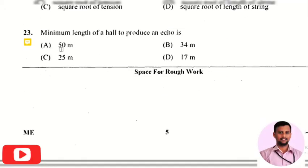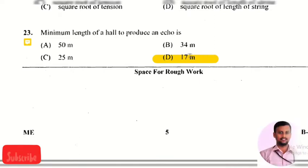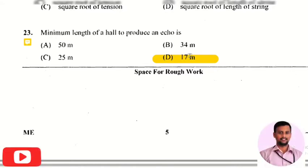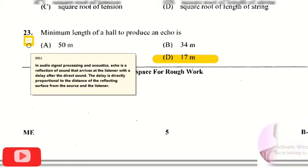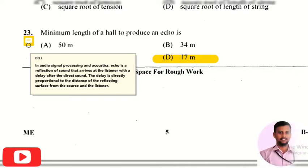The next question is: the minimum length of a hall to produce an echo is? The right answer is option 4, that is 17 meters. So if the hall is 17 meters or more, the echo will be produced in that particular hall. In audio signal processing or acoustics, the echo is a reflection of a sound that arrives at the listener with a delay after the direct sound.